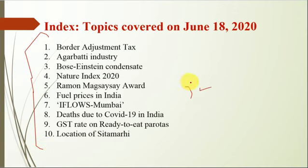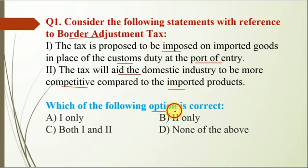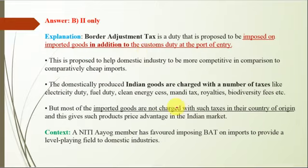Work hard, be consistent, and regularly watch our videos. Question number 1 is with reference to Border Adjustment Tax. Statement 1: the tax is proposed to be imposed on imported goods in place of the custom duty at the port of entry. Statement 2: the tax will aid the domestic industry to be more competitive compared to imported products. The correct option is B — only statement 2 is correct. Statement 1 is incorrect because Border Adjustment Tax is a duty proposed to be imposed on imported goods in addition to the custom duty, not in place of it, at the port of entry.